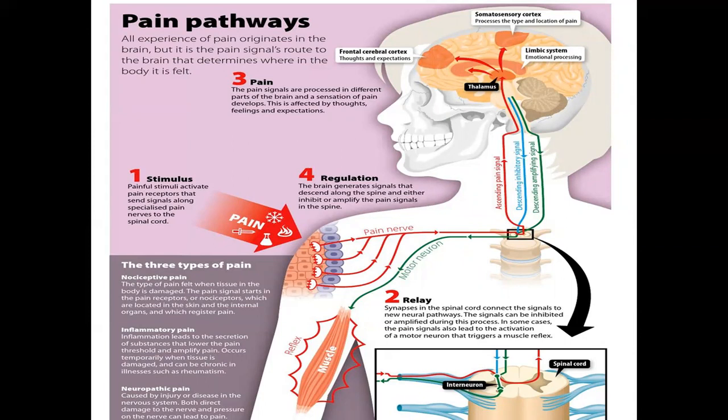Third, as the signals move toward the higher parts of the brain, pain signals are processed in different parts of the brain and our sensation of pain develops. This is affected by thoughts, feelings, and expectation from the frontal cerebral cortex; the somatosensory cortex processes the type and location of pain; and the limbic system handles emotional processing. Fourth, the brain generates signals that descend along the spine and either inhibit or amplify the pain signals in the spinal cord.